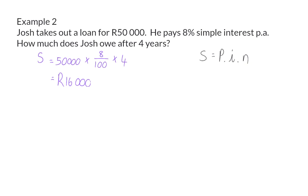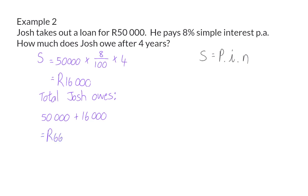This means that after 4 years, Josh has to pay back the 50,000 Rand he borrowed, plus the 16,000 Rand interest, so in total he owes 66,000 Rand. From these two examples, you can now see that in financial maths, simple interest is one of the places where we use our knowledge on percentages to do calculations.